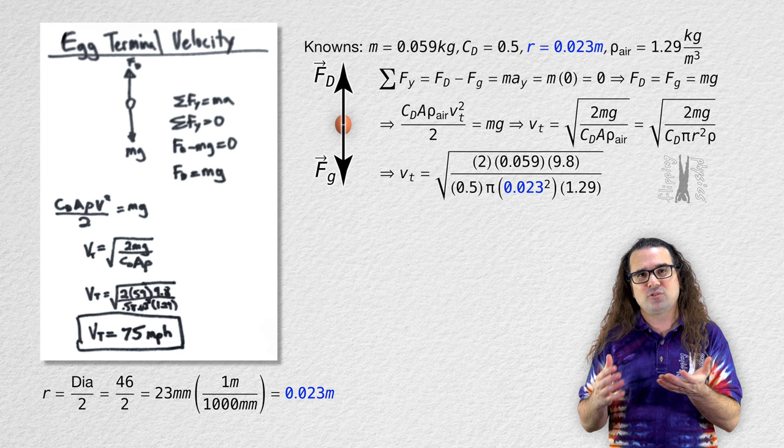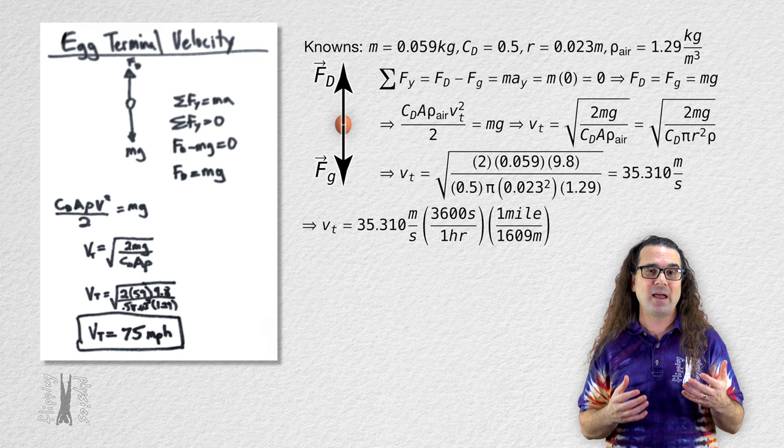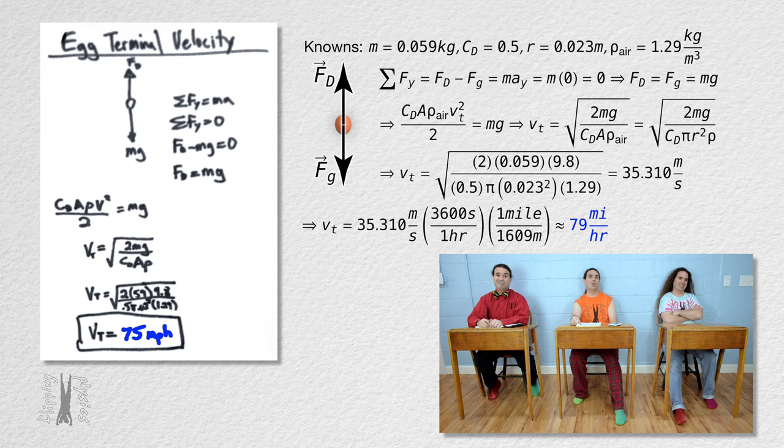When we substitute all those numbers in with 0.023 meters for the radius of the egg, we get 35.310 meters per second or multiplying by 3600 seconds over 1 hour and 1 mile over 1,609 meters, roughly 79 miles per hour, which is close to 75 miles per hour. So I'm guessing the radius you used was a bit more than 0.023 meters?